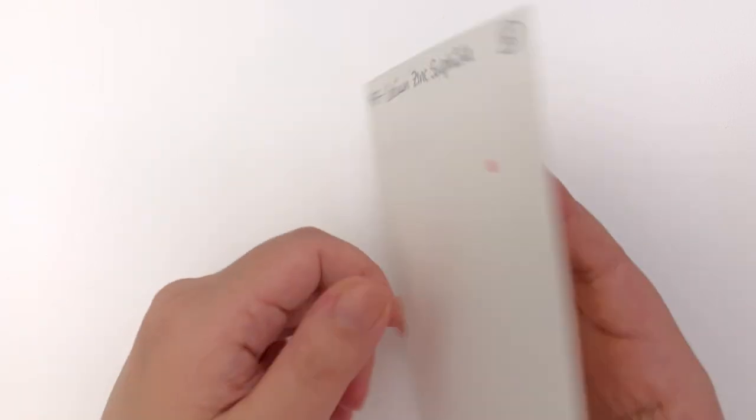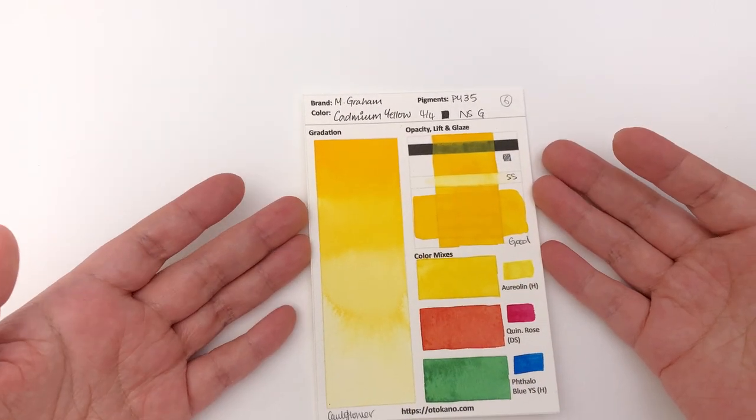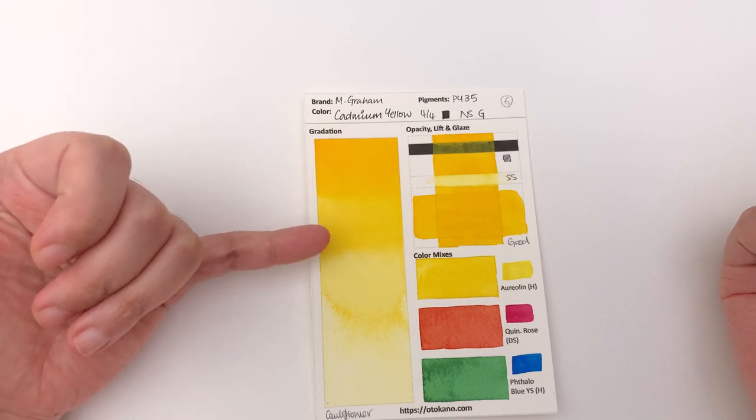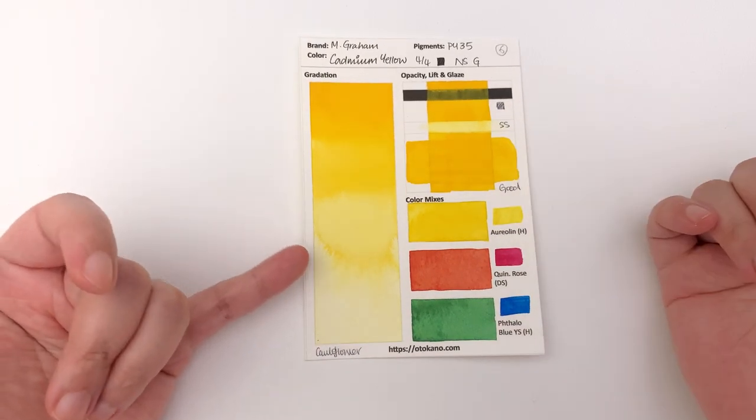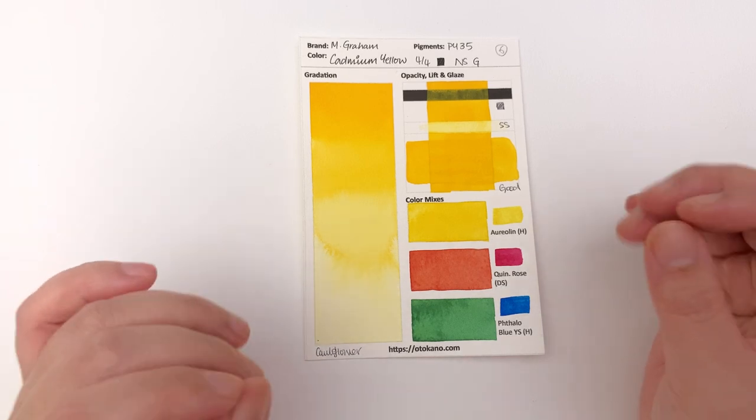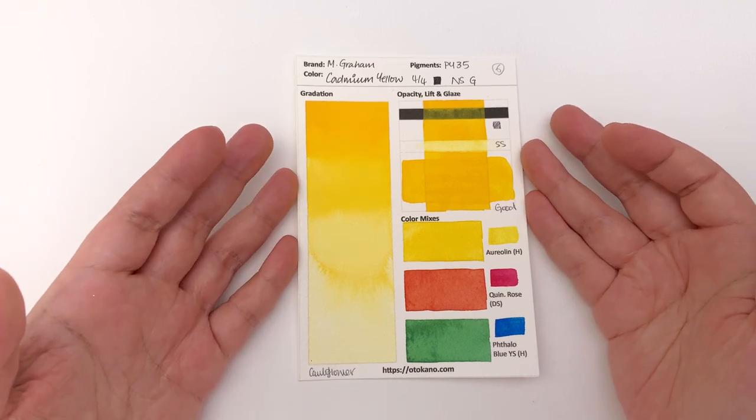It's a PY35 which is the cadmium zinc sulfide and it has one, two, three, four stages. So there's a stage missing there and it does suffer a little bit from the cauliflowering. So you're going to have to be a little bit more careful when you come to paint with this color.